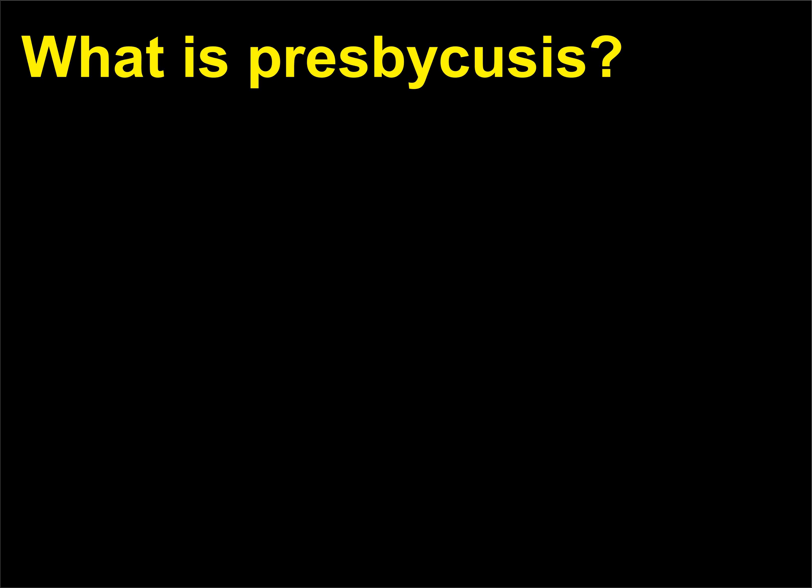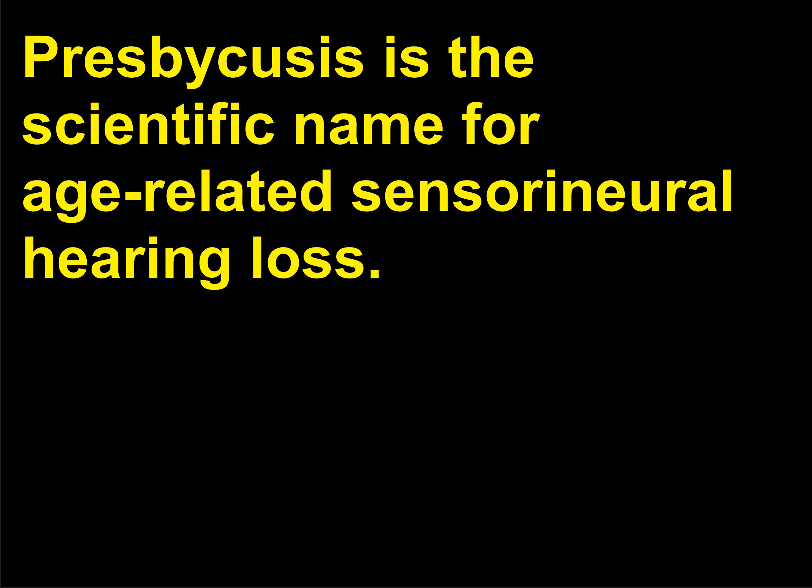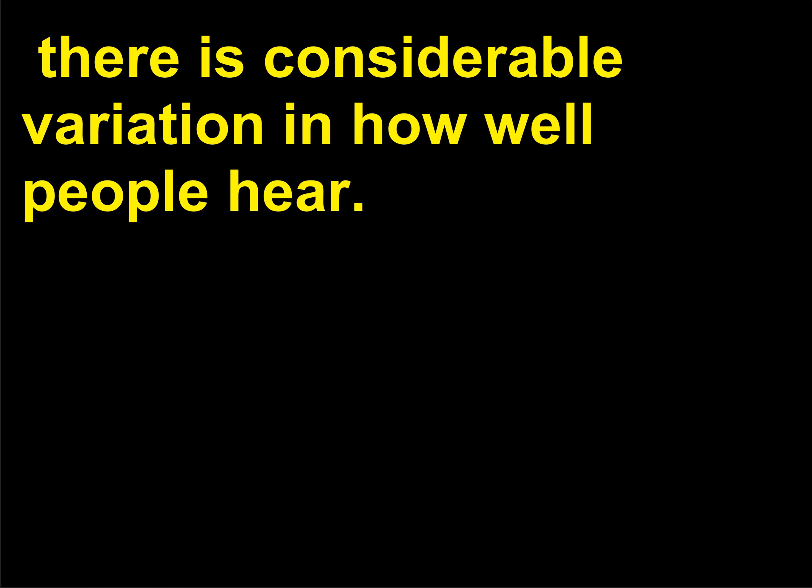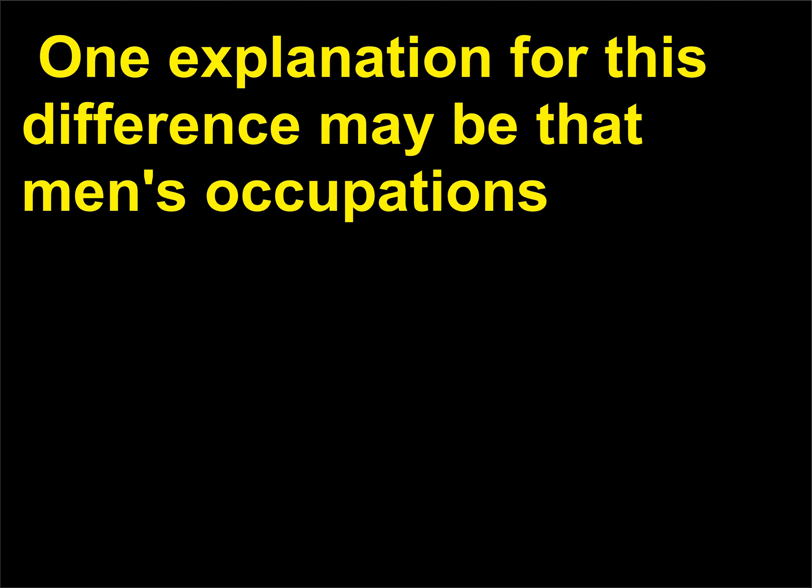What is presbycusis? Presbycusis is the scientific name for age-related sensorineural hearing loss. The first symptom is an inability to hear sounds at the highest frequencies, and can occur as early as age 20. Around age 60 there is considerable variation in how well people hear — some have had significant loss since age 50, while others have no hearing problems into their 90s. In general, men seem to experience hearing loss more often and more severely than women, possibly because men's occupations are usually associated with prolonged exposure to louder noises.